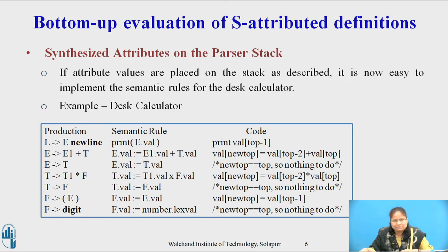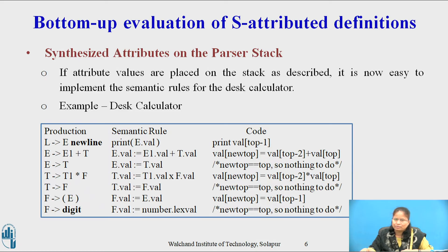For the production T → T1 * F, the semantic rule is T.val = T1.val * F.val and the associated code is val[ntop] = val[top-2] * val[top]. For the production T → F, the semantic rule is T.val = F.val and there is no code as ntop = top. For the production F → (E), the semantic rule is F.val = E.val and the associated code is val[ntop] = val[top-1]. For the production F → digit, the semantic rule is F.val = digit.lexval and there is no code as ntop = top.